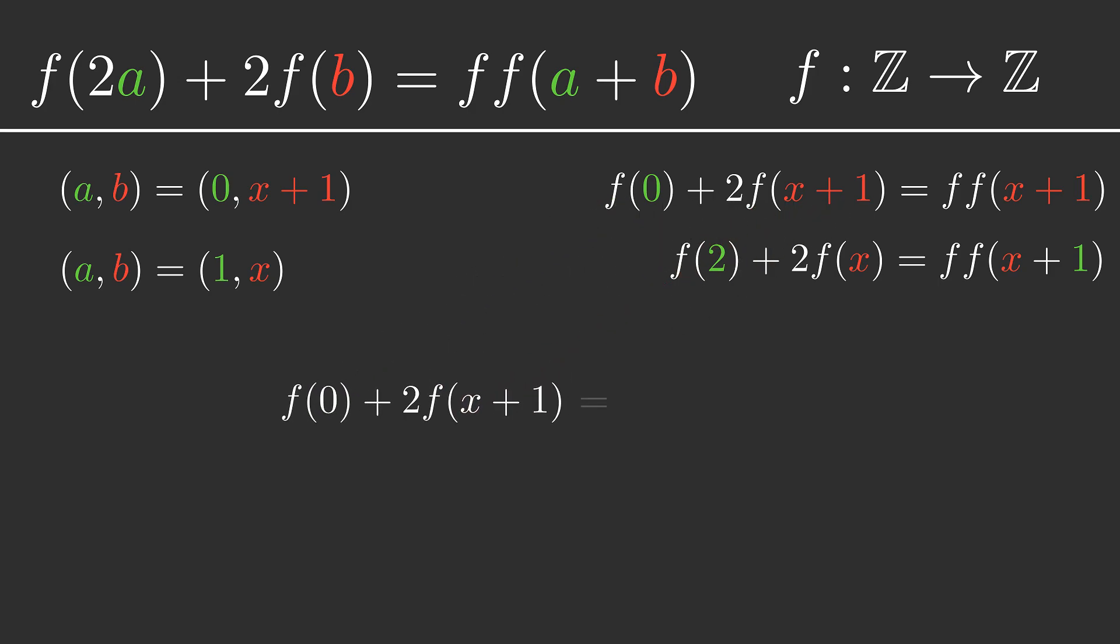So now we're able to set the two left hand sides equal to each other. We'll rearrange this so that all the parts with x are on one side and anything without an x is on the other side. Now look at the right hand side here, the part without the x's.